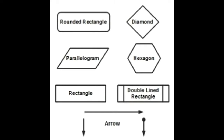Understanding flowchart symbols is important, as these diagrams greatly help to understand and create a process. A flowchart is a common form of a diagram which is used to represent an algorithm, program, or a process.